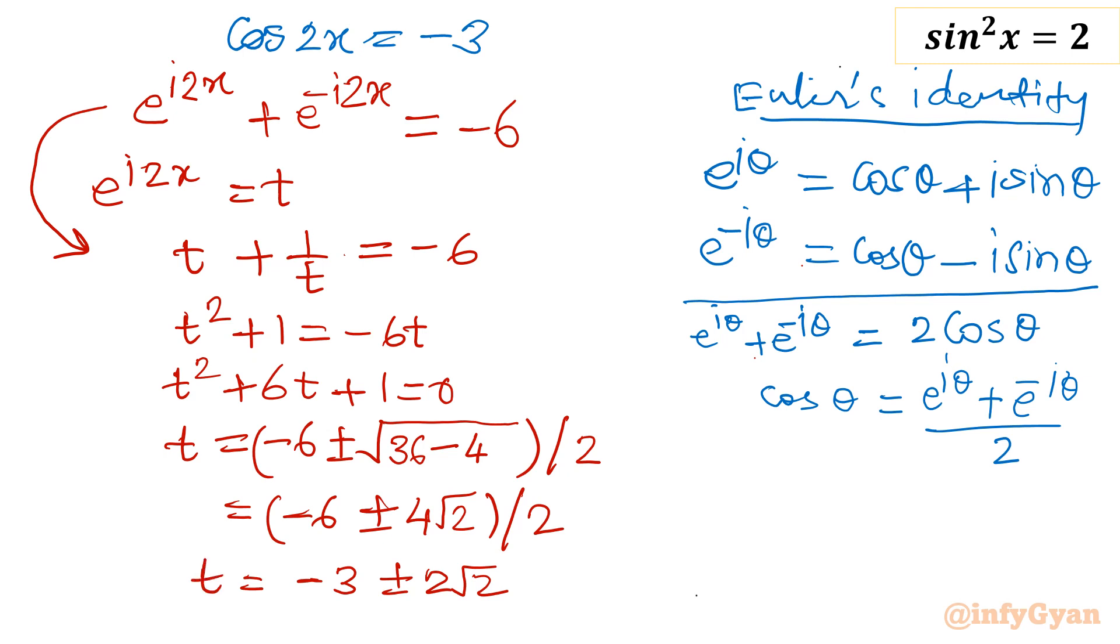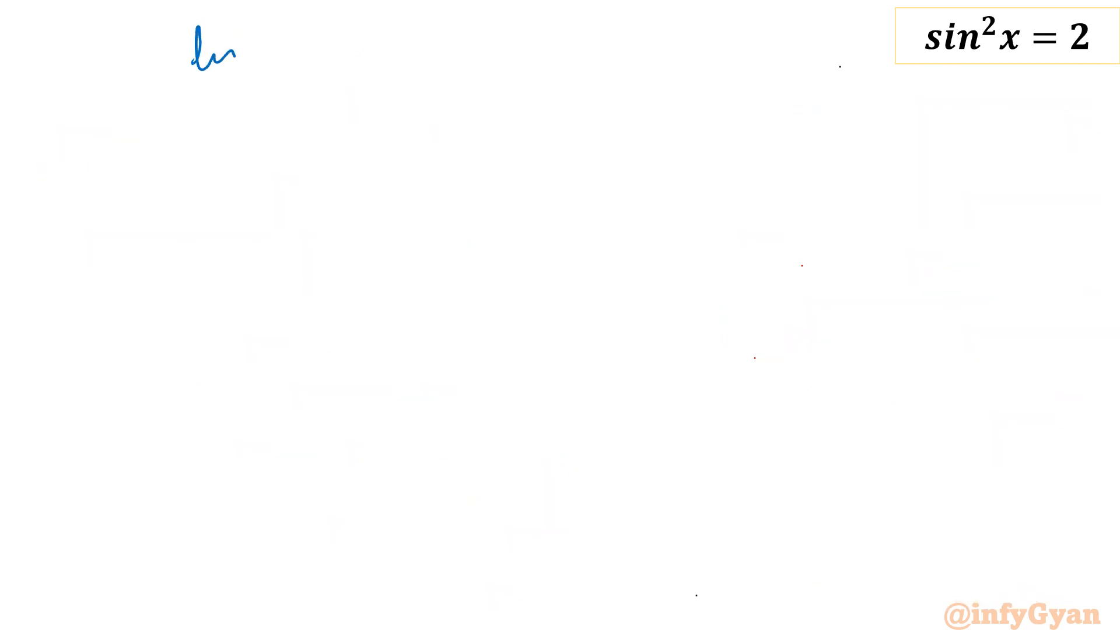That is equal to t. If I will replace what is t, so t is e raised to the power i times 2x. So e raised to the power i times 2x equal to minus 3 plus minus 2 root 2. Now I have to solve by taking log both sides. So I will take ln both sides. Let me write ln e raised to the power i times 2x equal to ln minus 3 plus minus 2 root 2.